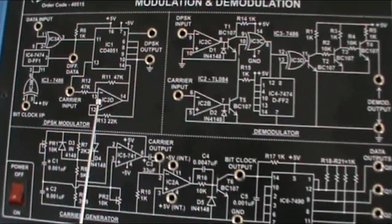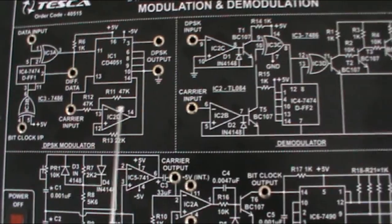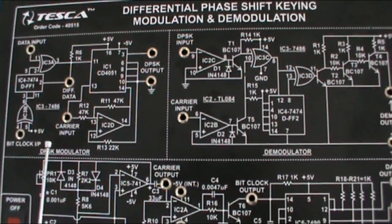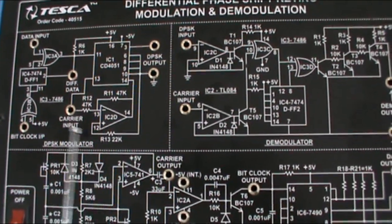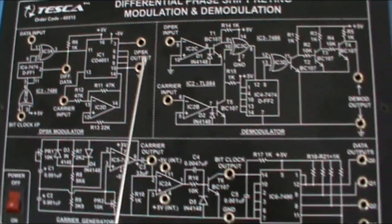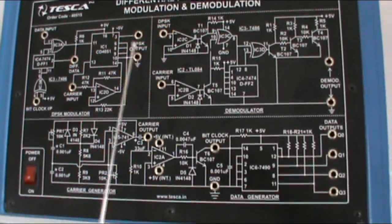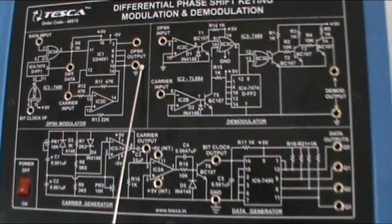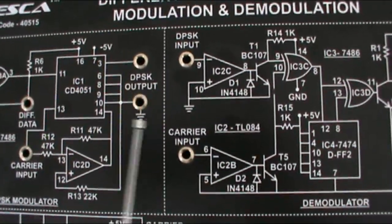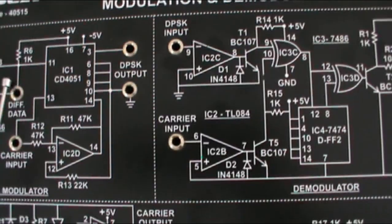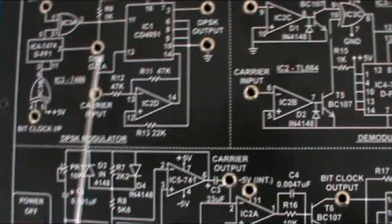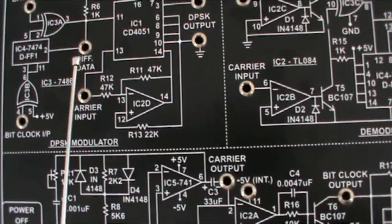This is another block — the DPSK modulator, differential phase shift keying modulator section. This is the circuit diagram of this section. An output of this section is available between these two points. This is the positive output and this is the ground terminal. This is differential data. You can observe this differential data with the help of a CRO.